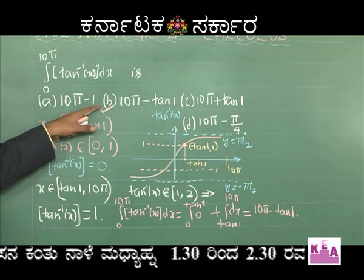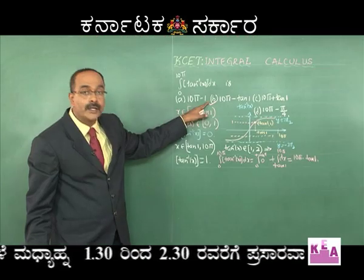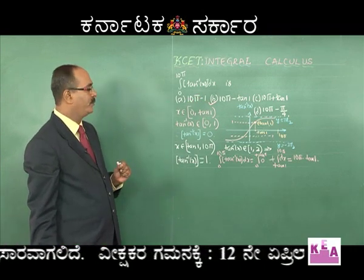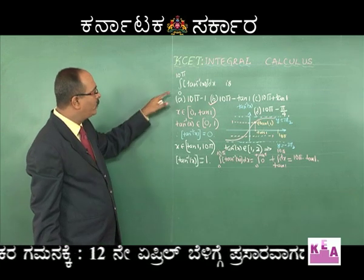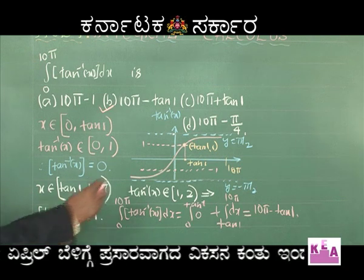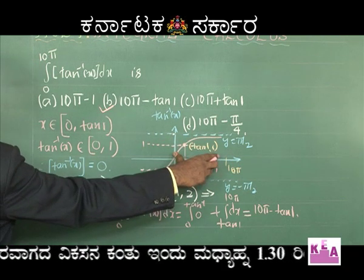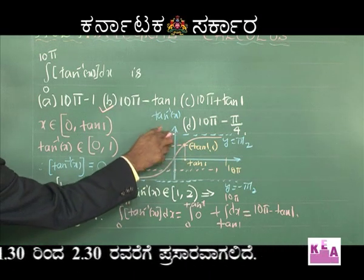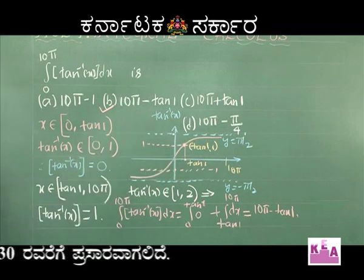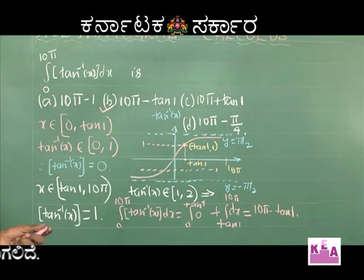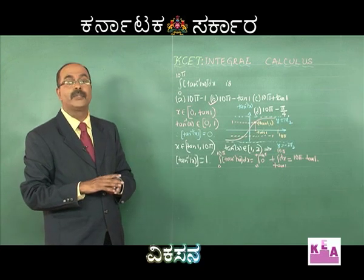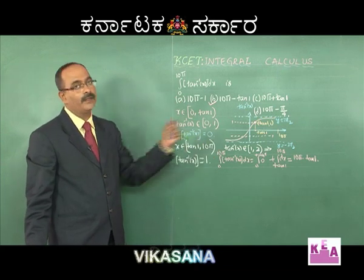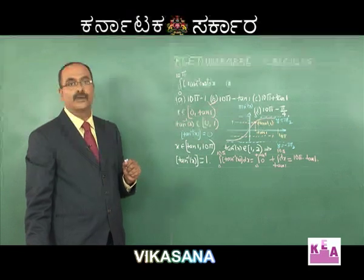Therefore the answer is 10π - tan1, so option b is correct. A shortcut using area concept is also available: the area under the floor function from 0 to 10π can be interpreted geometrically, but the traditional integration method gives the same result. Let us go to the next problem.